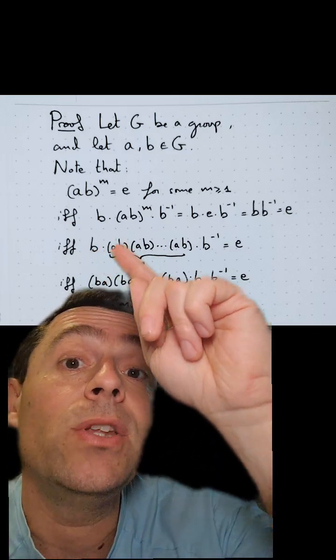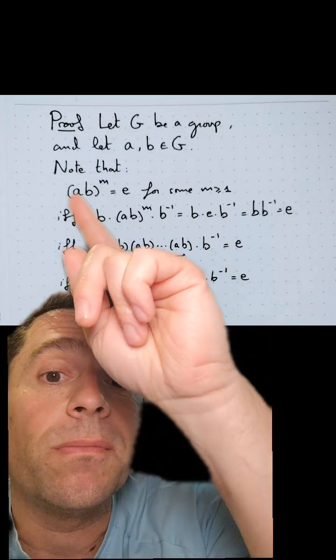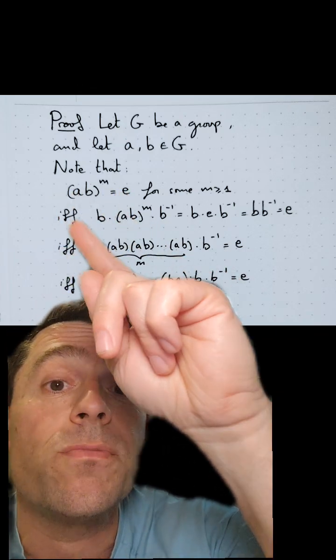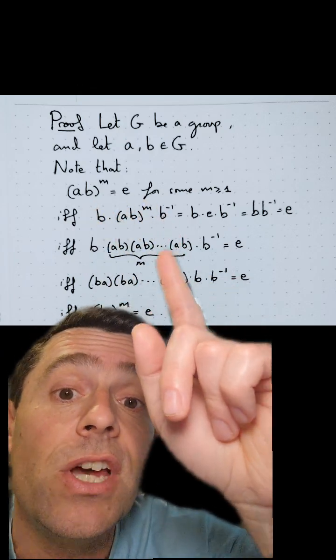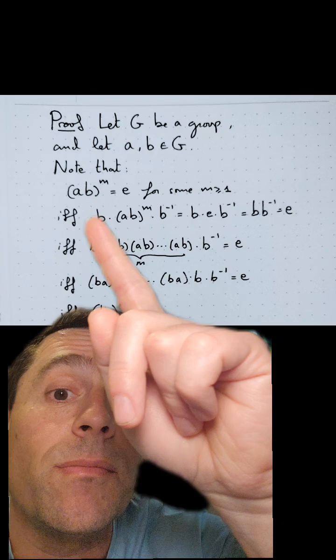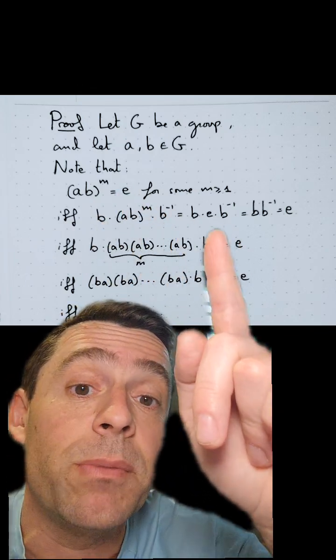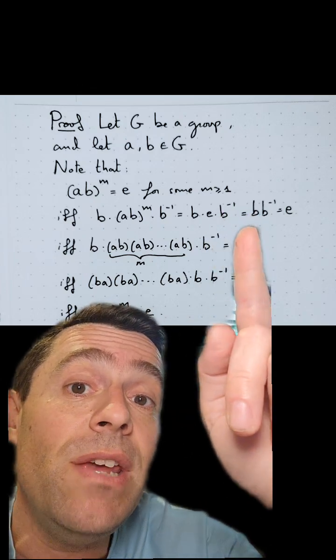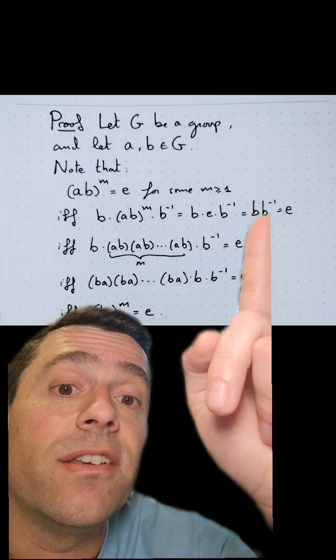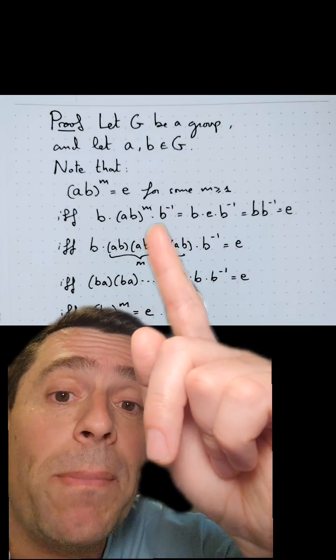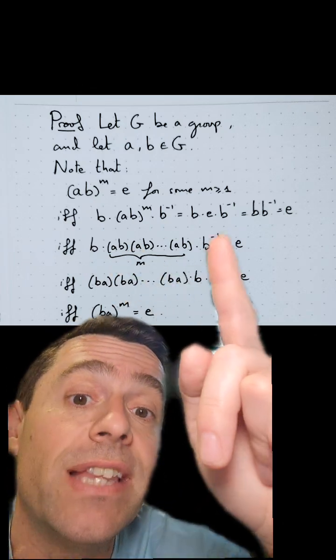Suppose that A times B to the Mth power is the identity for some M. Then what I can do is multiply on the left on both sides of that equation by B, and on the right of that equation on both sides by B inverse to get the following: B times A times B to the M times B inverse, which equals E times B times B inverse. But because E is the identity, that is just B times B inverse, and B times its inverse is identity. So what I get is that this is the identity. Now this I can expand as B times A times B, A times B, A times B, M times, times B inverse.